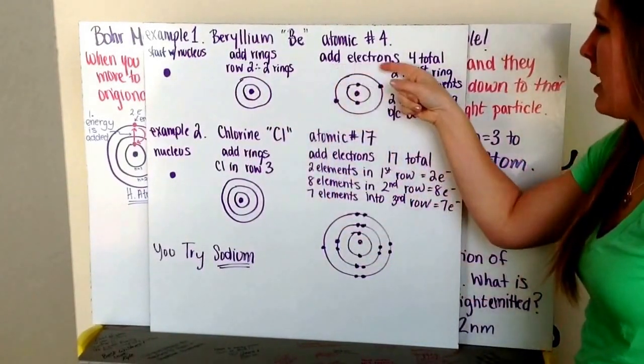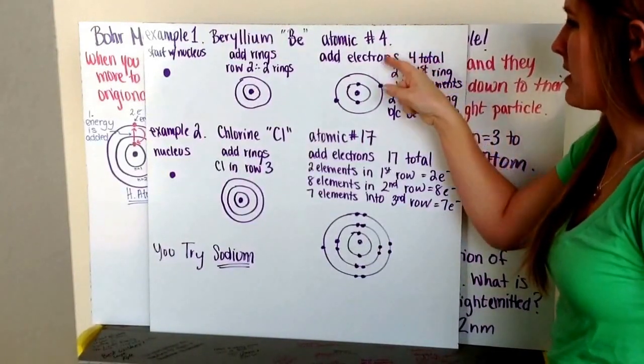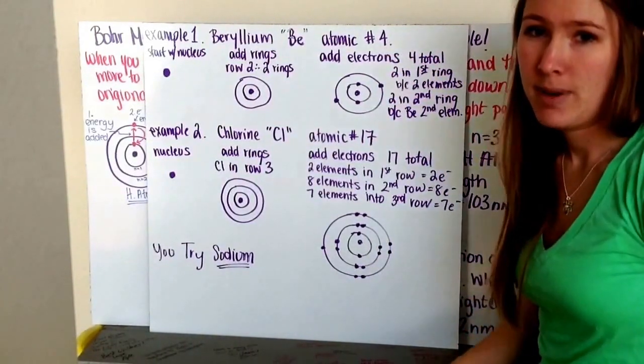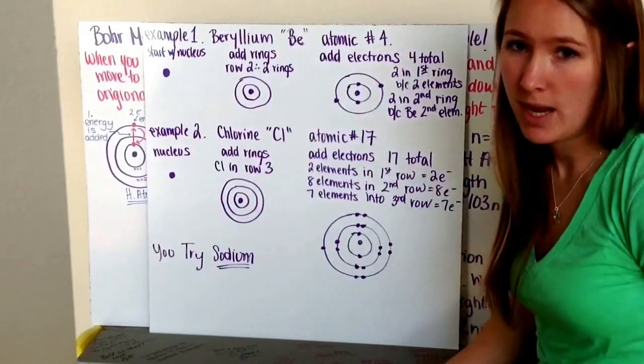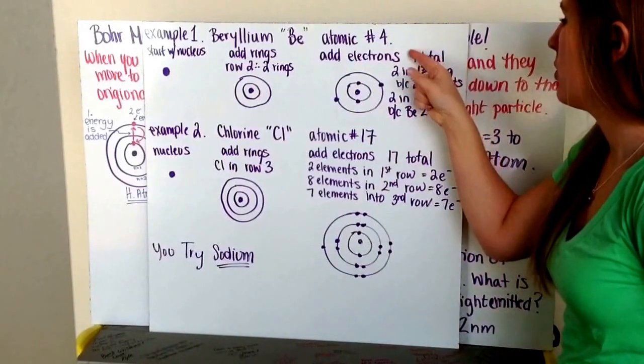Then I'm going to add my electrons. I need four total electrons, because it's atomic number four. It's an atom. My atomic number equals my number of protons. Protons equals my number of electrons, for atoms. So I have four total electrons.